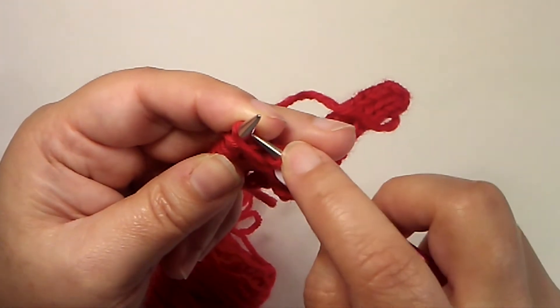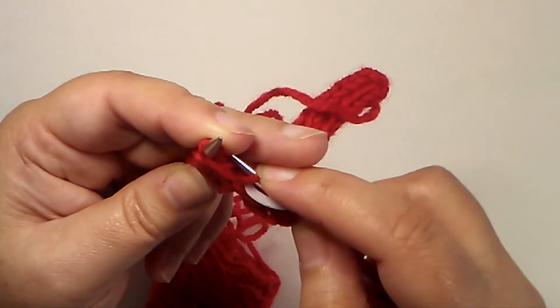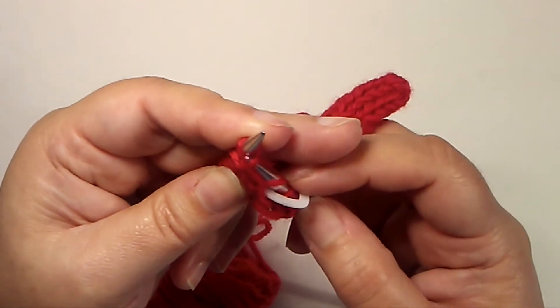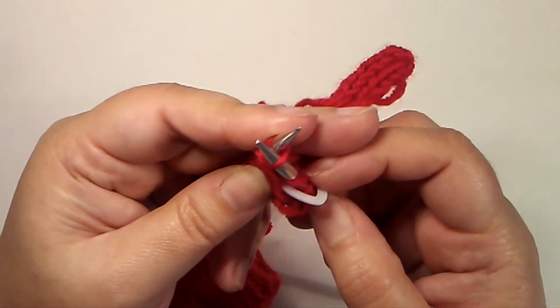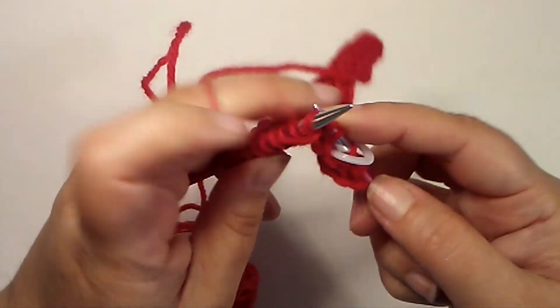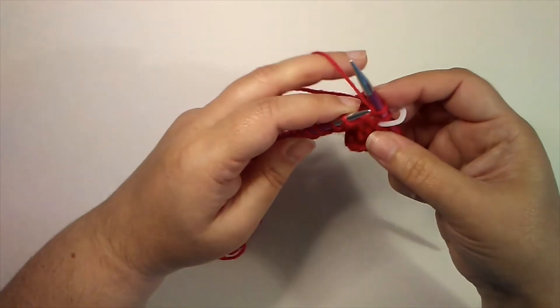You can see right here there's the front leg we just worked, there's that back leg. I need to bring my needle around and insert it behind, bringing it behind into the front, wrap my yarn, pull it through.